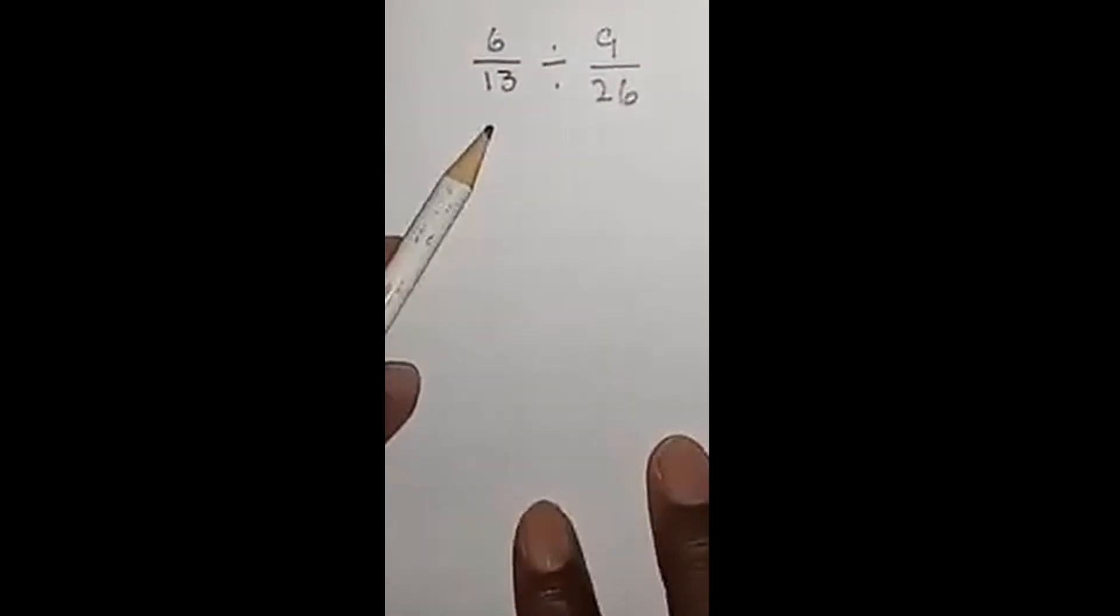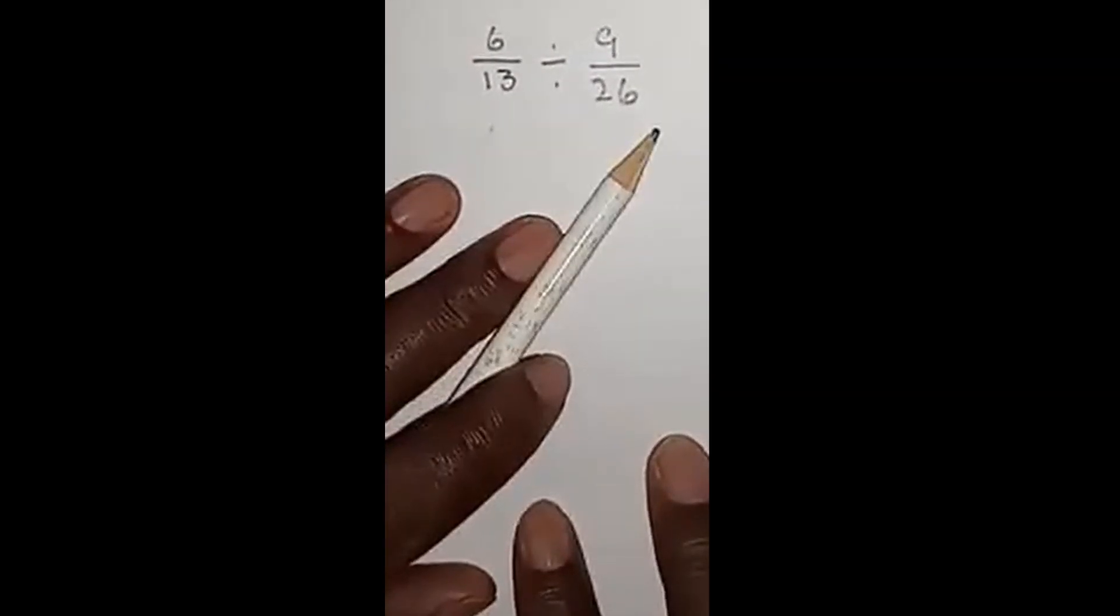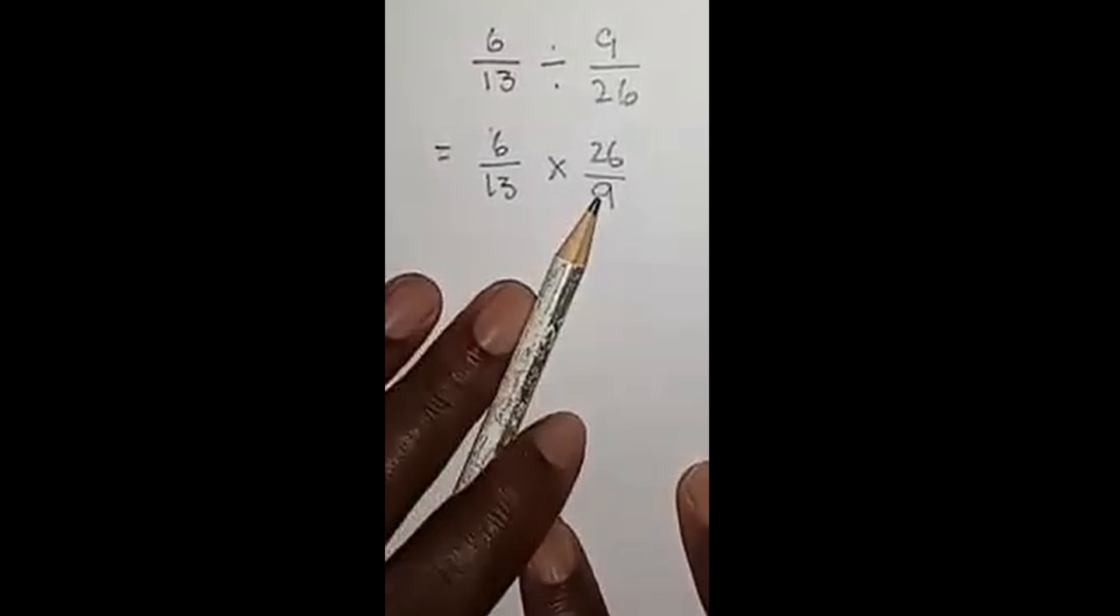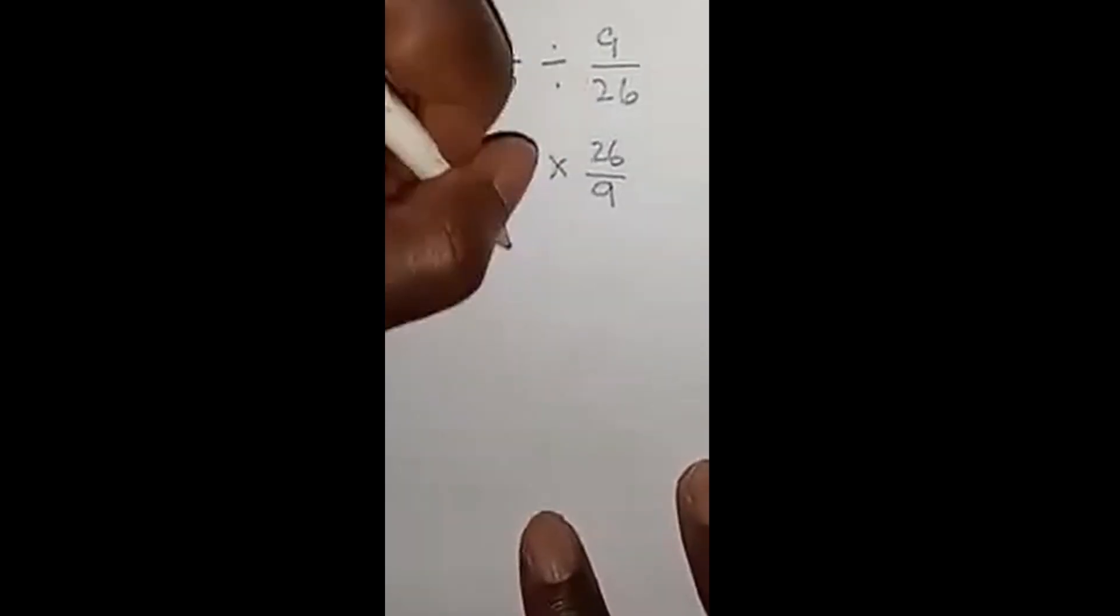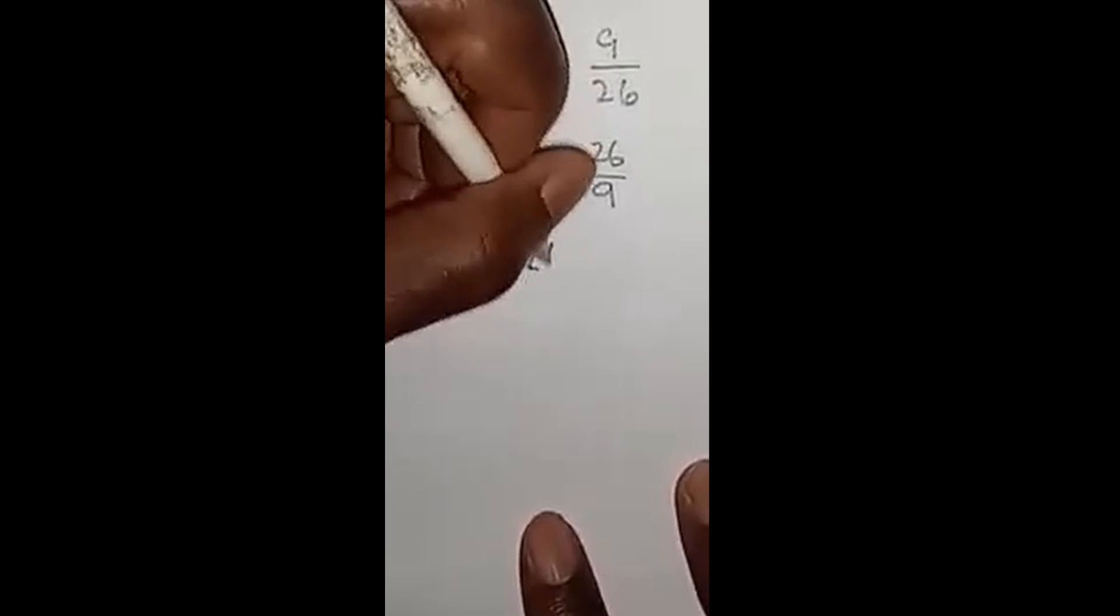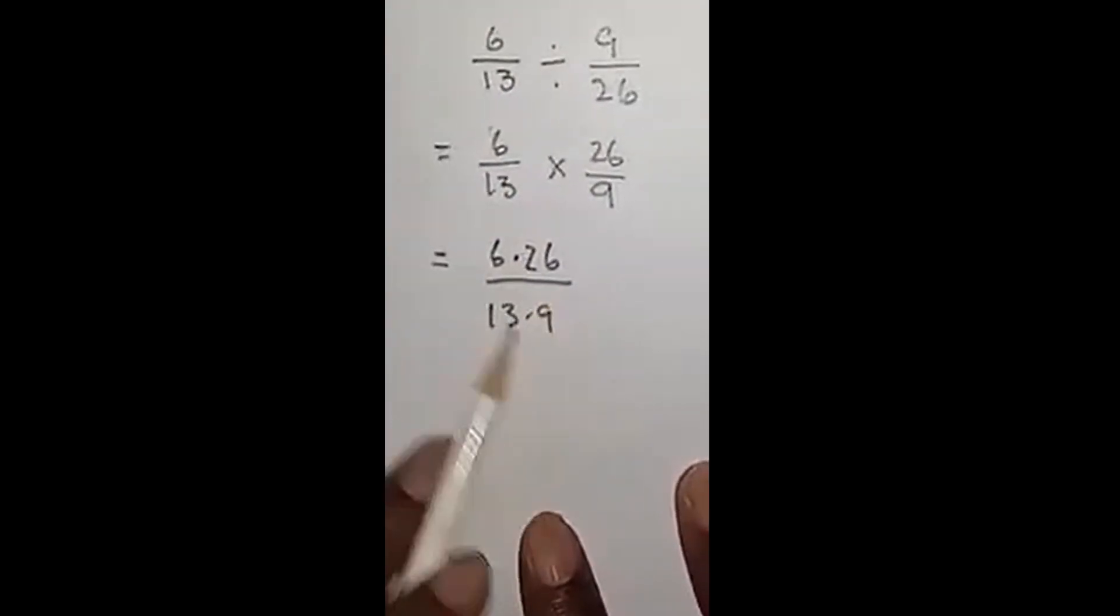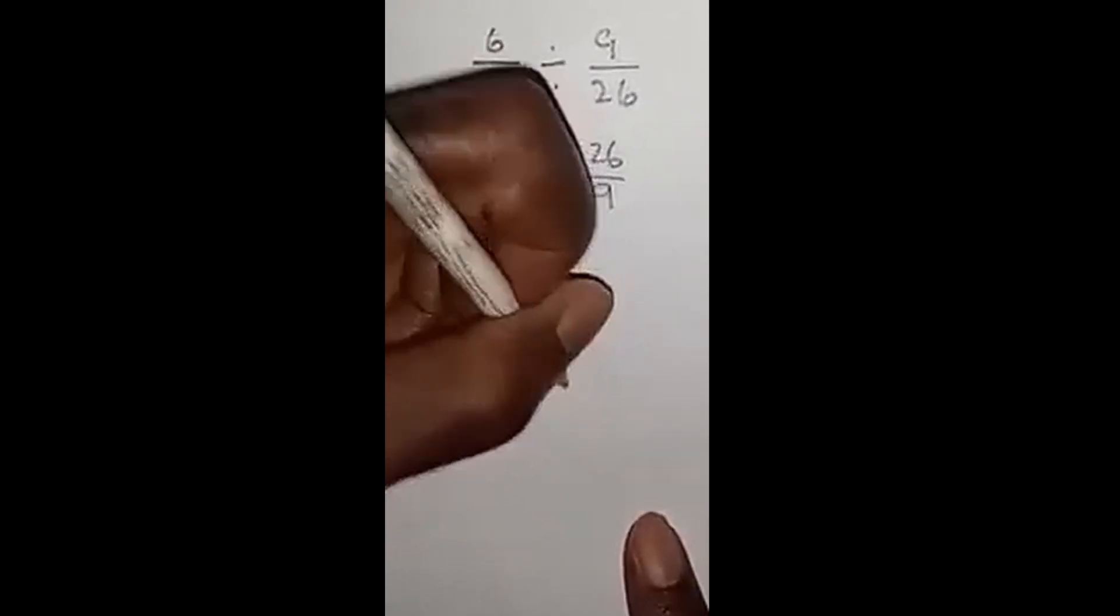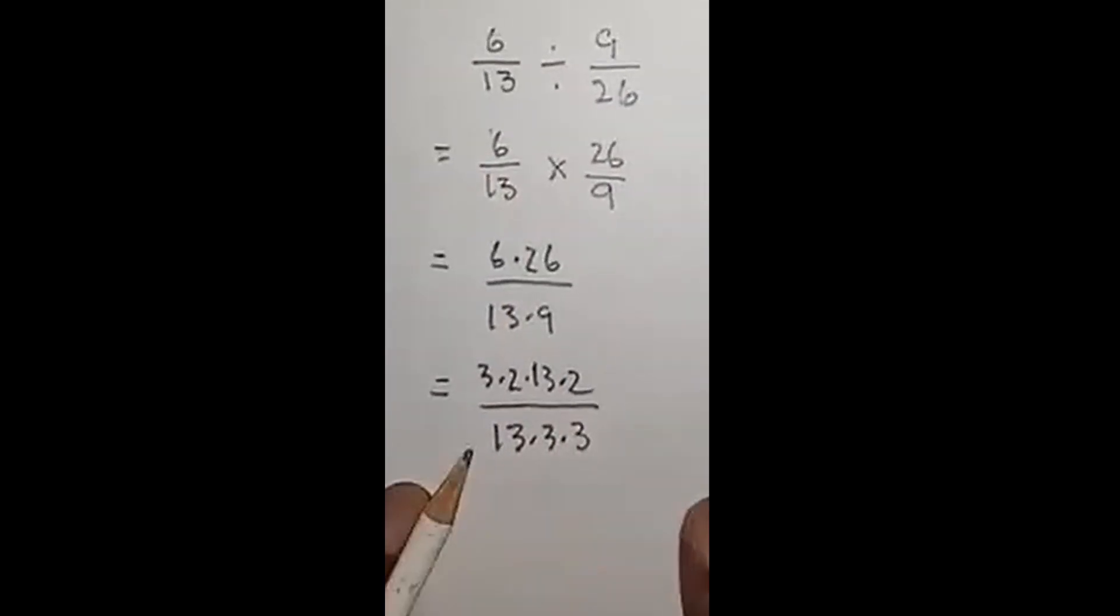Let's look at another example. Here we have 6 over 13 divided by 9 over 26. We keep change flip. So now once we keep change flip, we're going to do the same thing: combine and reduce. We're going to break these guys down. This is the prime factorization. Everything is prime. Now let's cancel, cancel, cancel. That's all we can cancel. I see 2 times 2 over 3. That's 4 over 3.